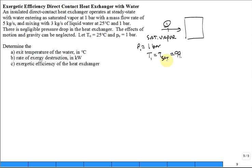It's around 99 degrees C, 99.6 degrees C. The saturation temperature for water at one bar, and it has a flow rate m_dot_1 of five kilograms per second.